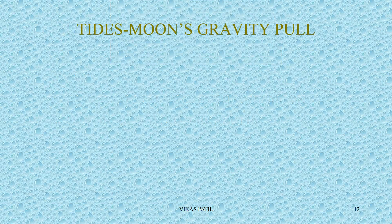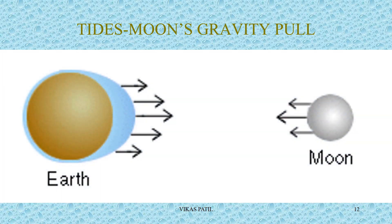Let's understand how the moon's gravitational pull affects tides. The moon has a gravitational pull, but it is much lesser than Earth's simply because of the size difference. Some free-flowing objects like water are affected by the moon's gravitational pull. The site facing the moon will have water pulled towards the moon, so the water level will rise there. The water level will fall at points perpendicular to the direction of the moon. Those two places will experience low tide, while the place facing the moon would have high tide.